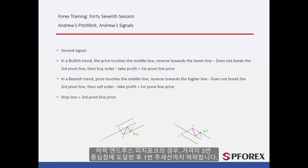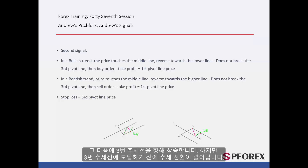In a bearish format, after the price has reached the third pivot, it will decrease until the first pivot line. The price increases towards the third pivot line again.